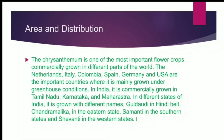Area and Distribution. Chrysanthemum is one of the most important flower crops commercially grown in different parts of the world. The Netherlands, Italy, Colombia, Spain, Germany and USA are the most important countries where it is mainly grown under greenhouse conditions. In India, it is commercially grown in Tamil Nadu, Karnataka and Maharashtra. It is known by different names: Guldaudi in the Hindi belt, Chandra Malika in the eastern states, Samanti in the southern states, and Shivanti in the western states.